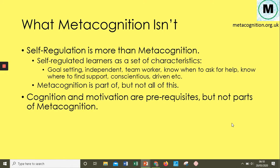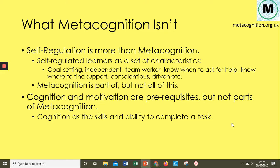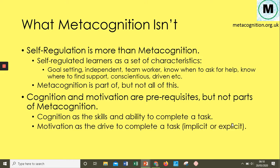Metacognition is directly linked to both cognition and motivation — they are prerequisites for metacognition even happening. Without cognition, you cannot have metacognition. Cognition refers to the skills and abilities we have to complete a task — for example, the ability to drive a car or chop an onion, skills we have learned and developed. Motivation is the drive to complete a task, whether implicitly because we enjoy it, or explicitly because we're forced to.